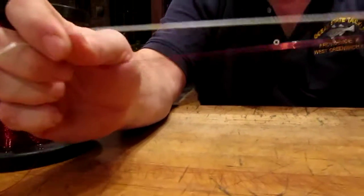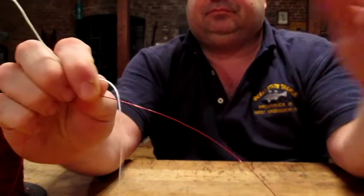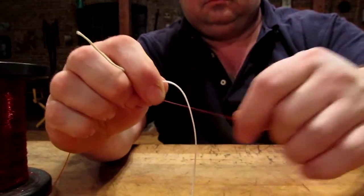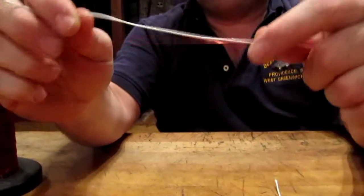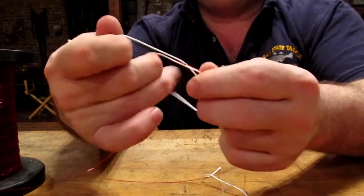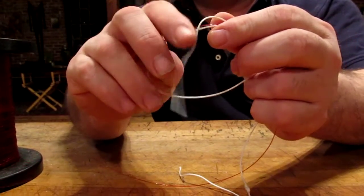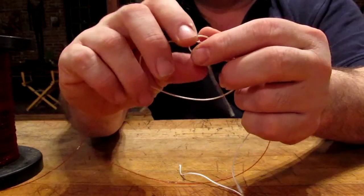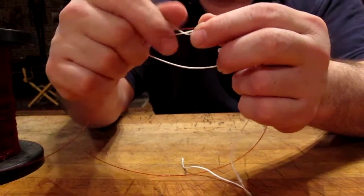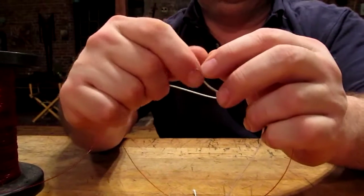You take the two lines and run them past each other so you have them parallel. You make a loop. You turn. You pass this line along with the braid.